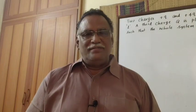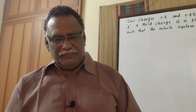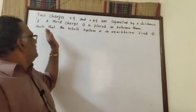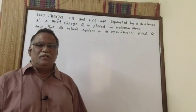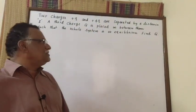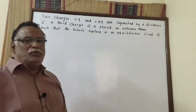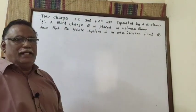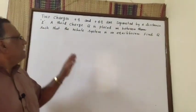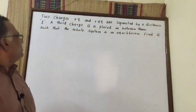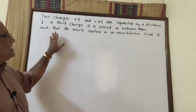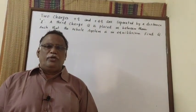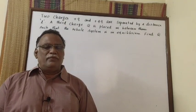So with a small introduction, we will start. Thank you friends, we will go to the video. There is a problem in electrostatics: Coulomb's two charges, plus Q and plus 4Q, are separated by a distance L. A third charge Q is placed in between them such that the entire system is in equilibrium. Find the value of Q.